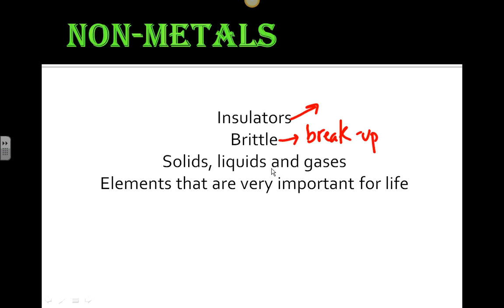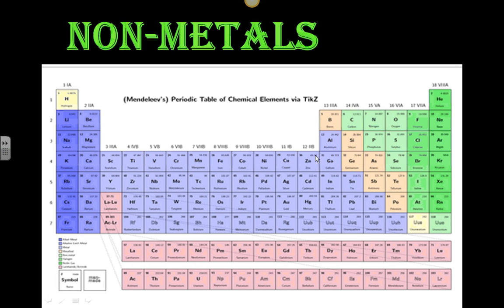They can be solids, liquids, and or gases at room temperature. An example here, nitrogen, oxygen, fluorine, and chlorine. And all of these over here are gases at room temperature. And bromine is a liquid. These other guys here are solid at room temperature.